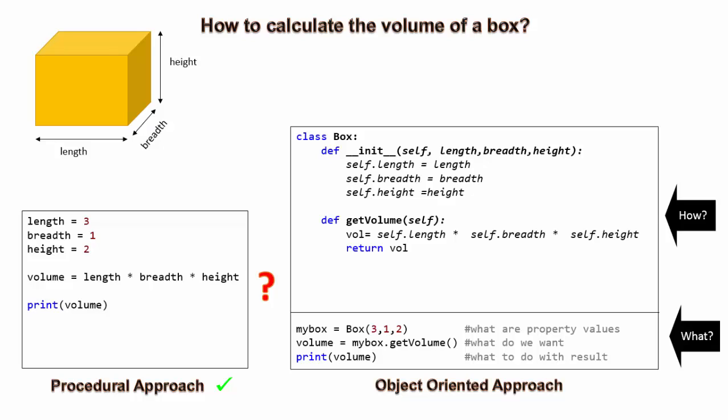Consider that there are 100 different boxes whose volume is supposed to be calculated. Once the box class is created, we can create 100 different instances of the same. Now, in this scenario, if someone decides to change the formula for volume, for instance, assume that the answer as of now is in cubic centimeters. But as per new business requirement, it should be calculated in cubic millimeters. When we use box class, then all we need to do is change the formula at one place that is inside the get volume method.